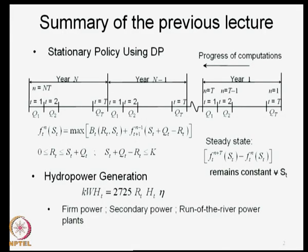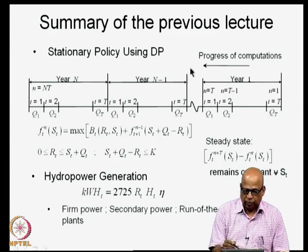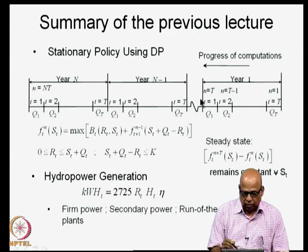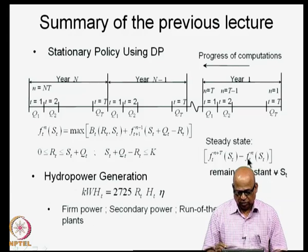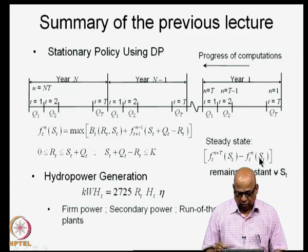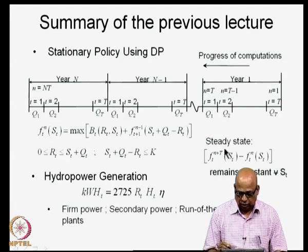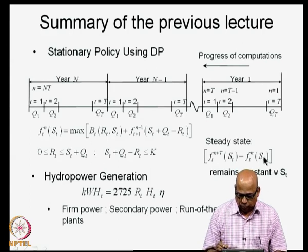Specifically in the last lecture, we discussed the stationary policy using dynamic programming. We formulated the reservoir operation problem as a dynamic programming problem, started the computations far into the future, proceeded in the backward direction, and kept solving the problem recursively until a steady state was reached. The steady state is examined by the accumulated performance measure for a given state S_t at stage n, which represents the annual system performance corresponding to state S_t.